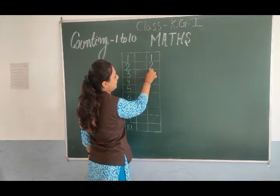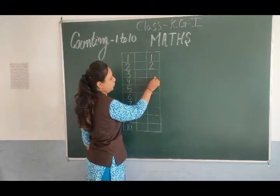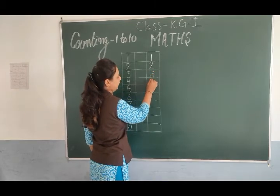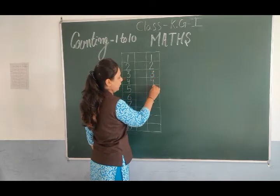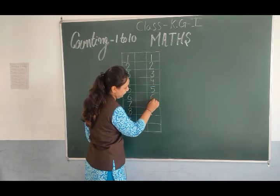Puri counting line se touch hona chahiye. Aise saari dekho touch hai meri line se box se touch hona chahiye. 3, 4, 5.